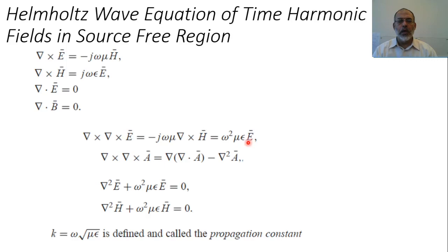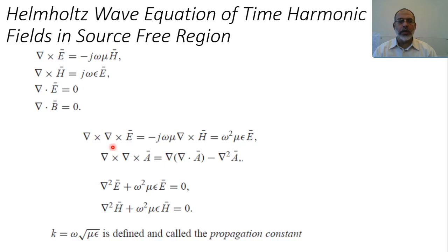The curl-curl of a vector can be expanded as the gradient of the divergence minus nabla-squared. It should be noted that the gradient of the divergence is not equivalent to nabla-squared, so those terms are not zero in general. However, because the divergence of E equals zero in source-free free space, the gradient of divergence term vanishes, and curl curl E reduces to minus nabla-squared E.